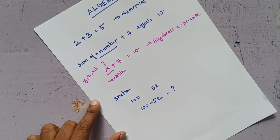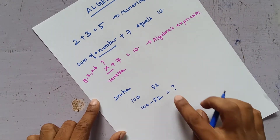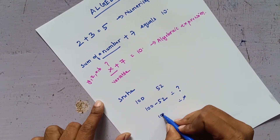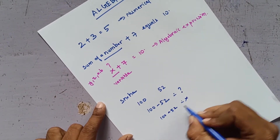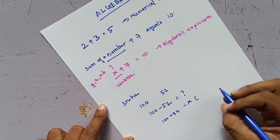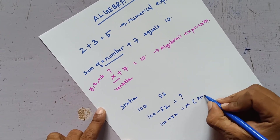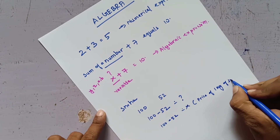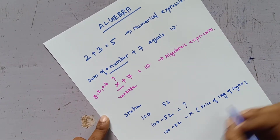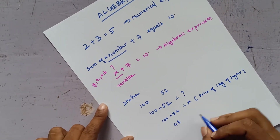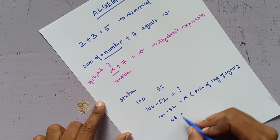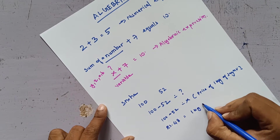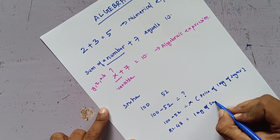This unknown cost can be replaced by X, so X is the price of one kilogram of sugar. We get X equals 100 minus 52, which is 48 rupees — that is the cost of 1 kg of sugar.